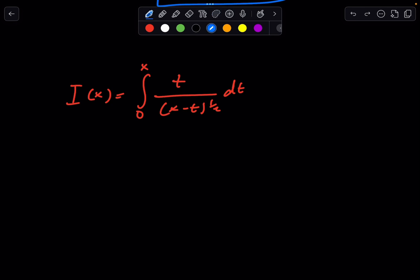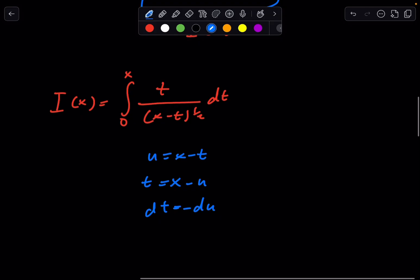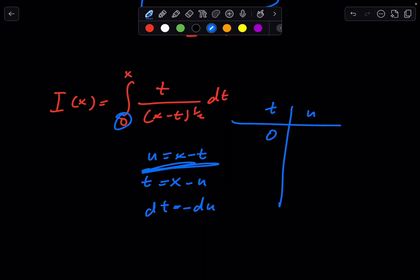We can simply do some u substitution here. We have u is equal to x minus t. That means t is equal to x minus u, and dt equals negative du. Now, we have to also change our bounds as well. So, when t is 0, what is u? This is our definition for u, so we plug that in. u is equal to x, then. And then, when t is equal to x, which is this bound, u is equal to x minus x, which just becomes 0.